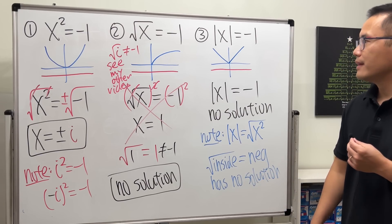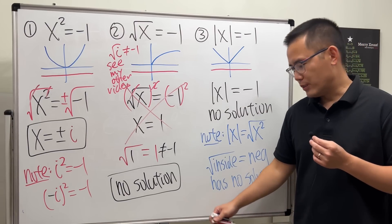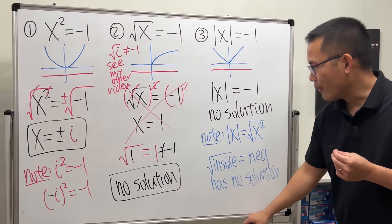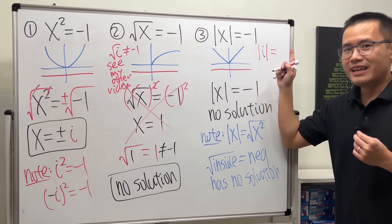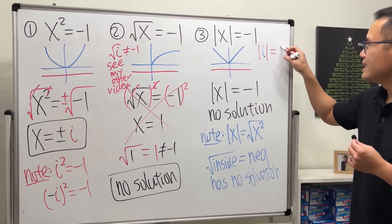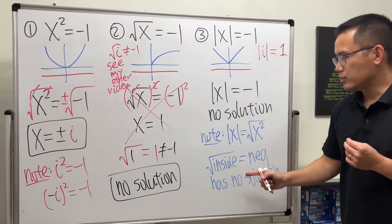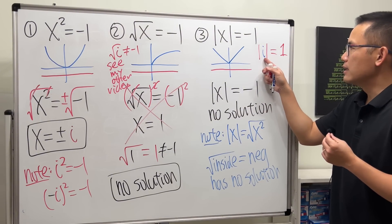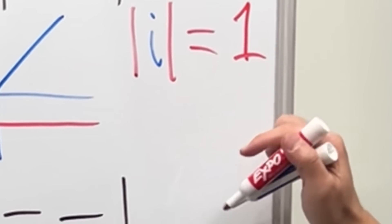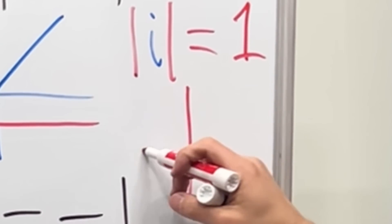How about i though? Can we really use i? No, if you put i inside of the absolute value, let me tell you this right here is equal to one. Because remember, absolute value tells you the distance between this number to the origin.